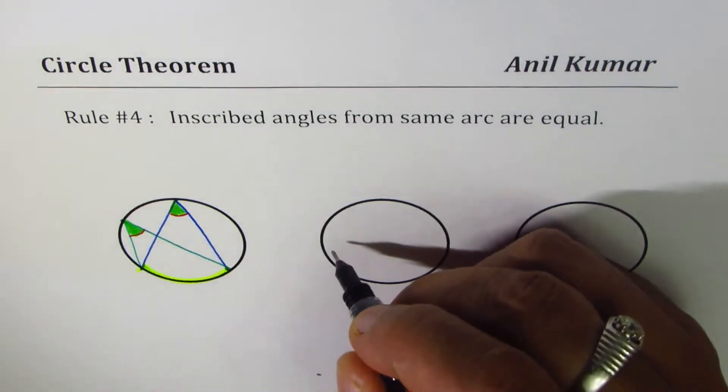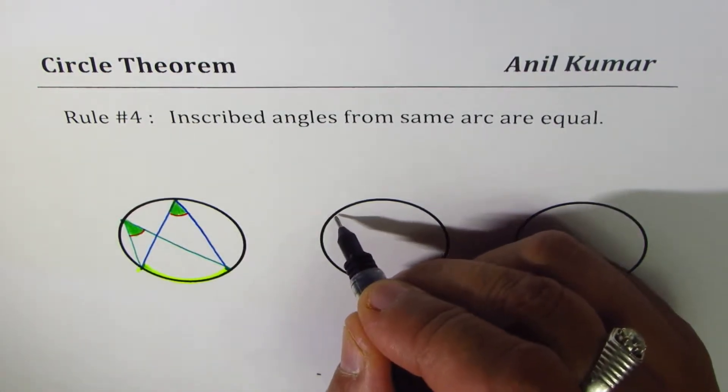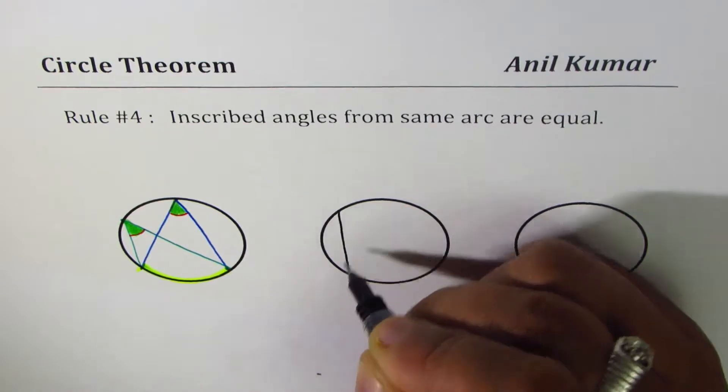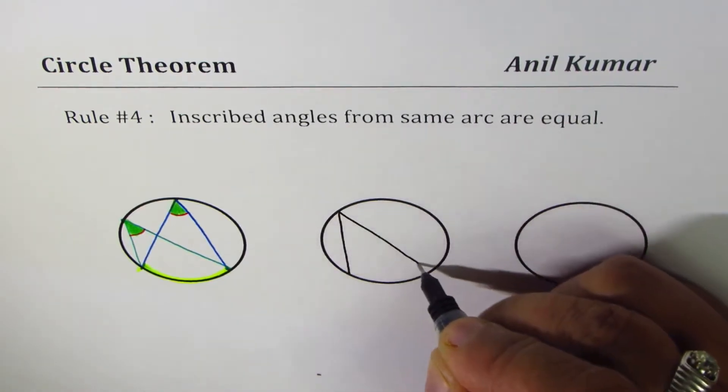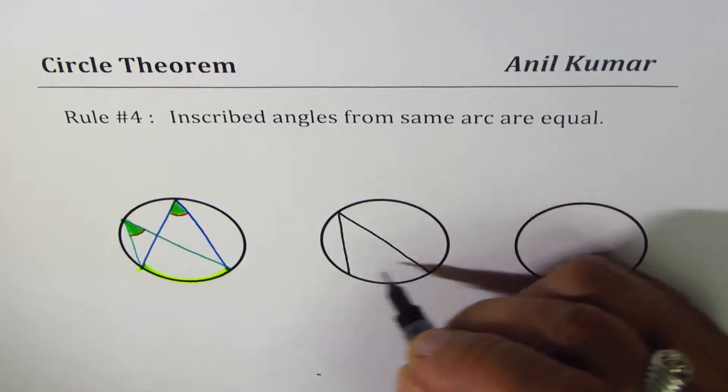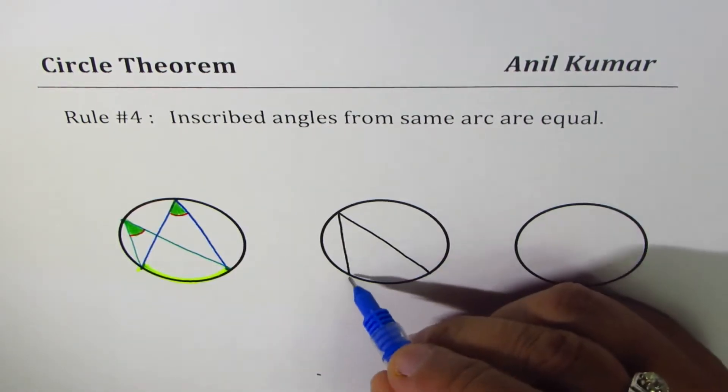If I sketch something like this, let's say that's the arc and this is one angle. The other one, let me make a different thing.